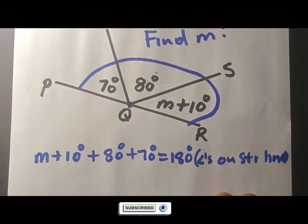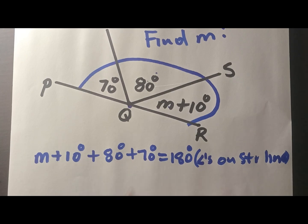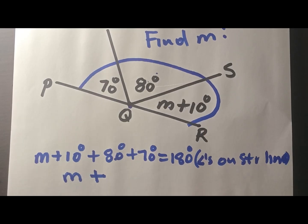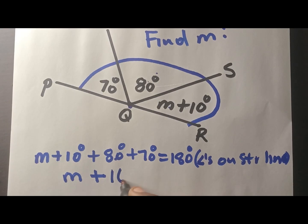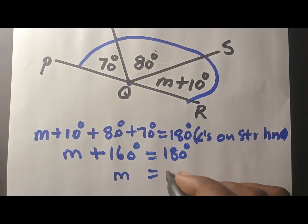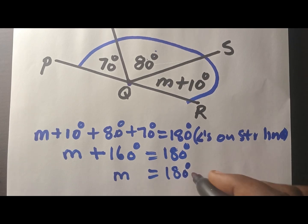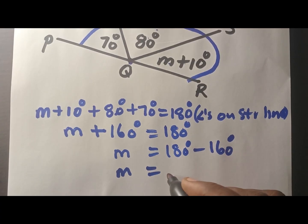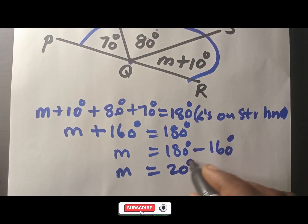Now you need to solve this. Let's simplify first: 70 plus 10 is 80, and 80 plus 80 is 160 degrees, equal to 180 degrees. My next move is to take 160 to the other side, so M equals 180 minus 160 degrees, which gives me 20 degrees.